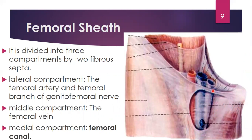The femoral sheath is divided into three chambers by two vertical fibroseptal partitions separating the contents. The two vertical fibroseptal divide the femoral sheath into medial, intermediate, and lateral compartments. The medial compartment contains the femoral canal, the intermediate compartment contains the femoral vein, and the lateral compartment contains the femoral artery.